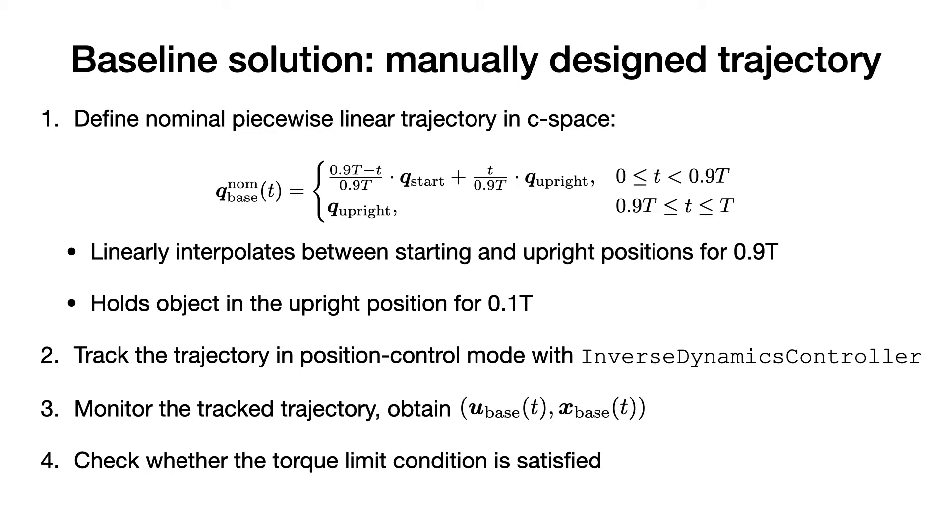Consider a simple solution for the weightlifting problem. In this baseline solution, I define a hand-designed trajectory in the configuration space. This baseline trajectory interpolates between the initial position of the arm and the upright position and holds the upright position for some time. I execute the C-space trajectory in position control mode and monitor the torques commanded by the inverse dynamics controller.